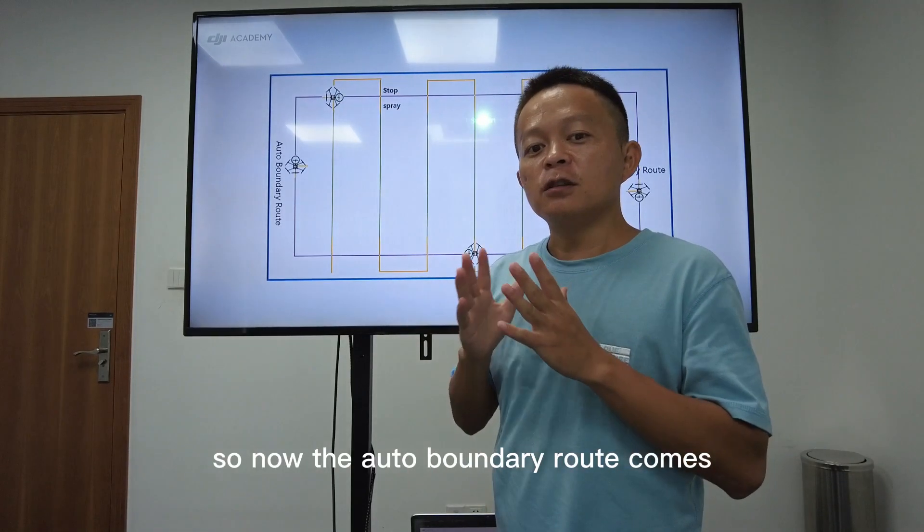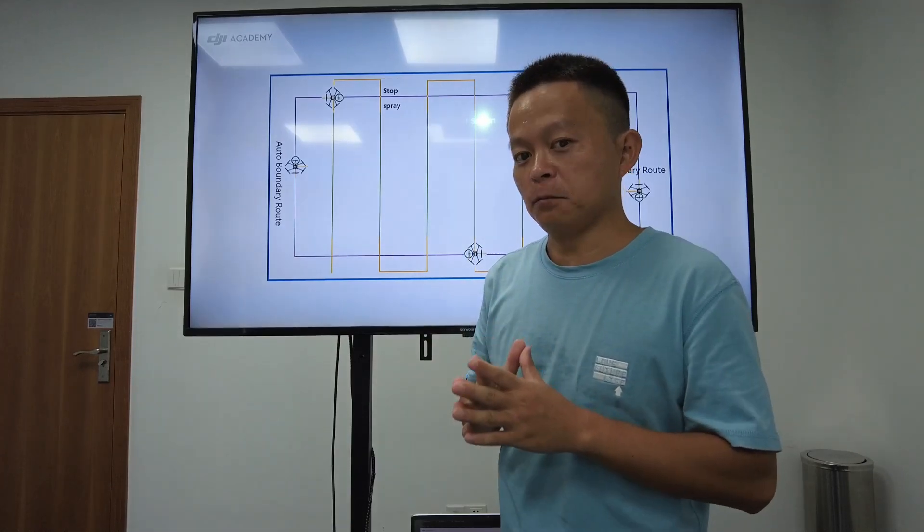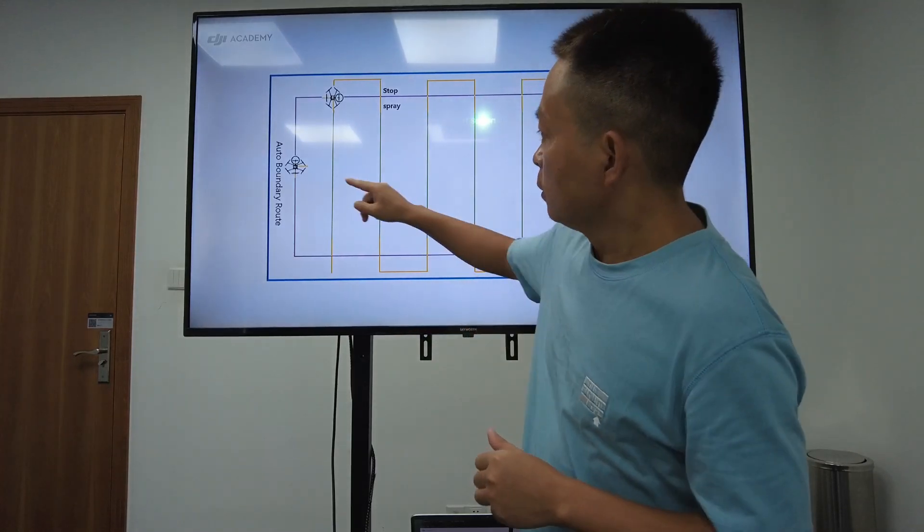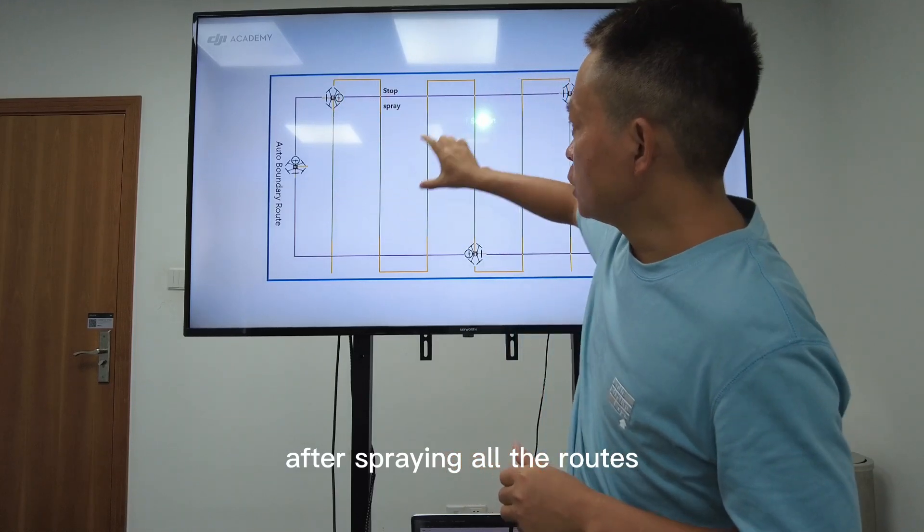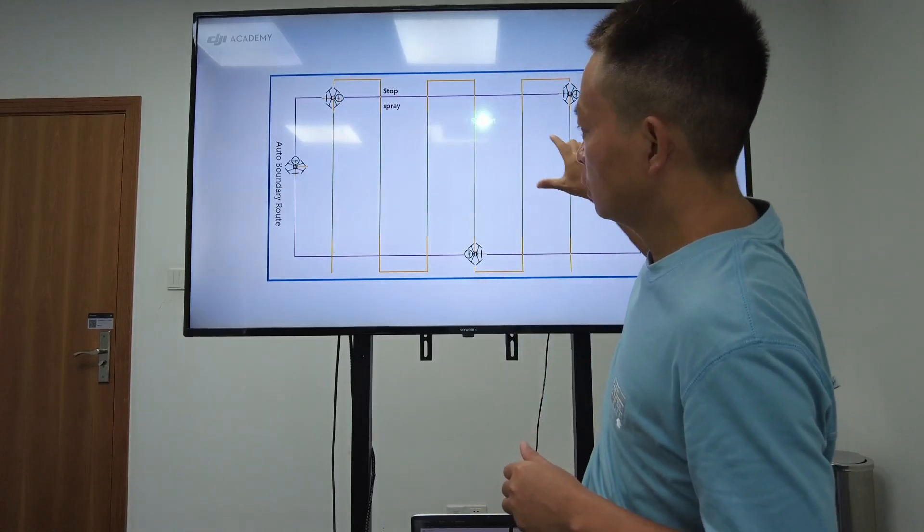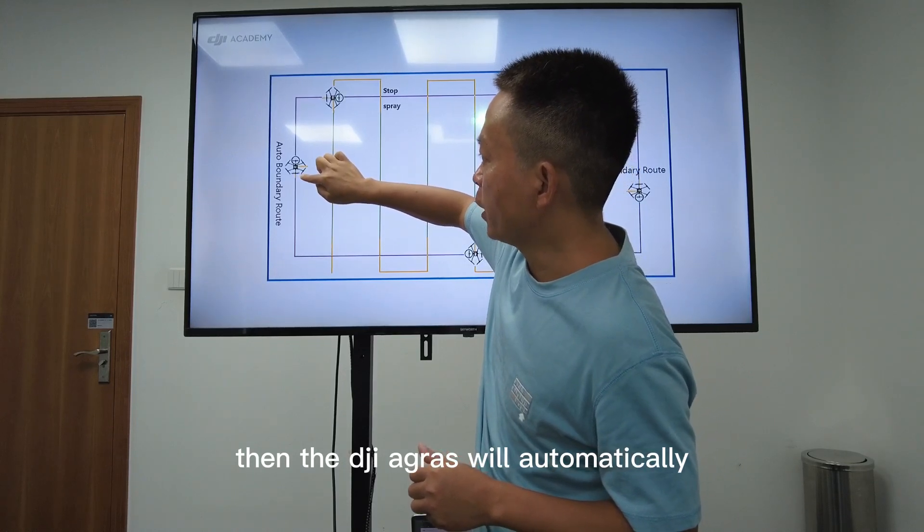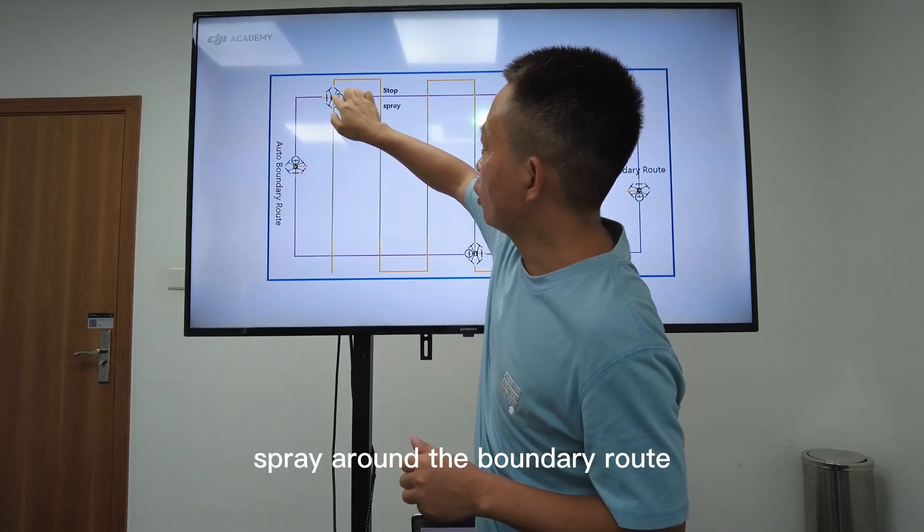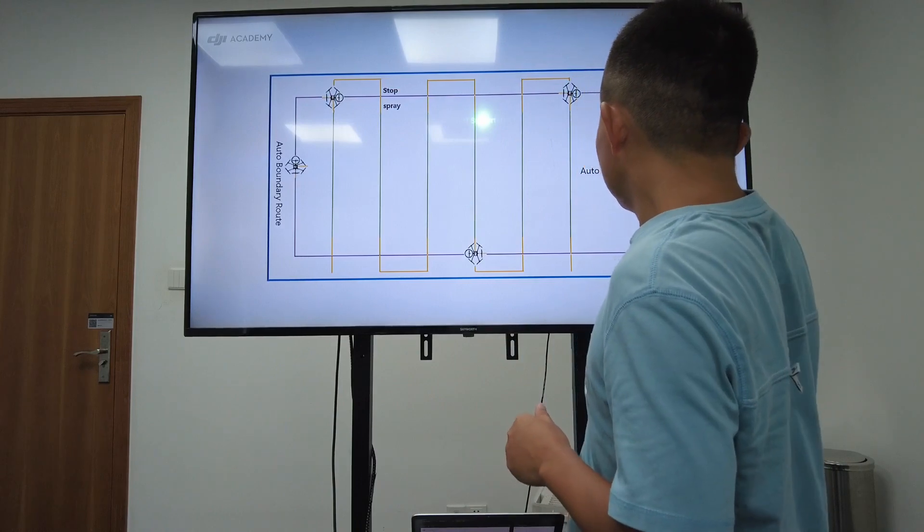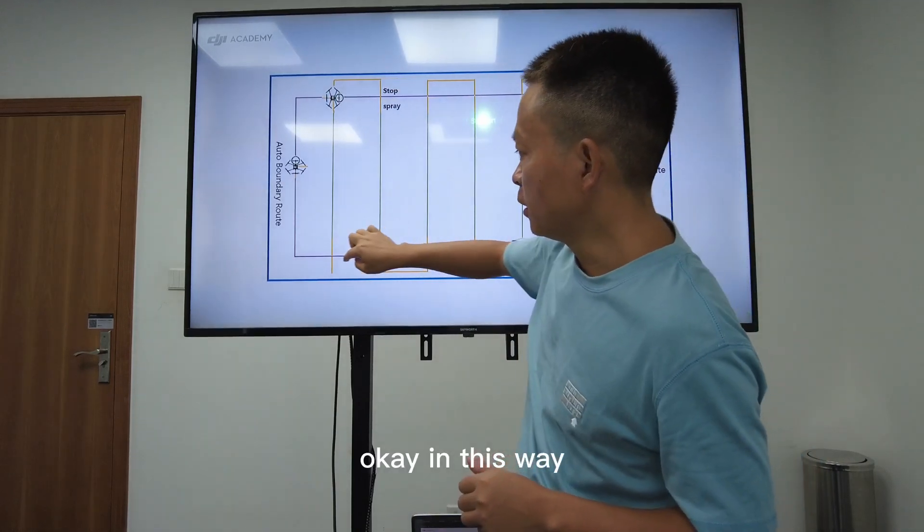So now the auto boundary route comes. After spraying all the routes, then the DJI Agras will automatically spray along the boundary route in this way.